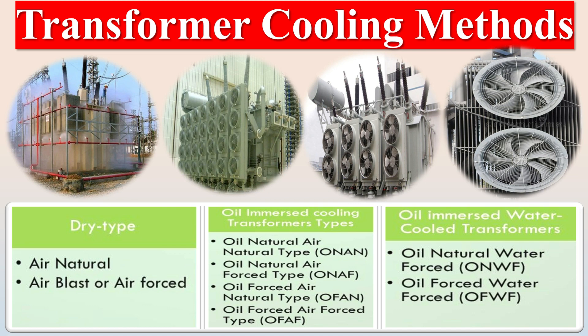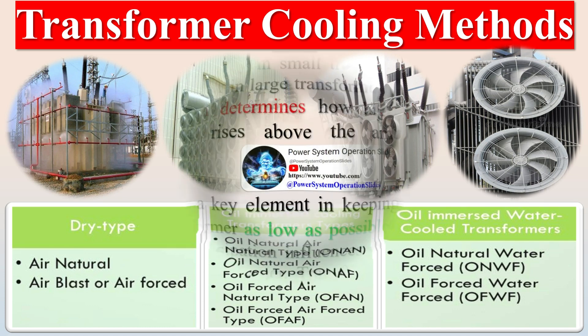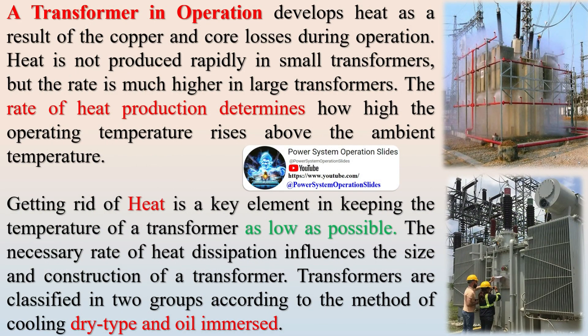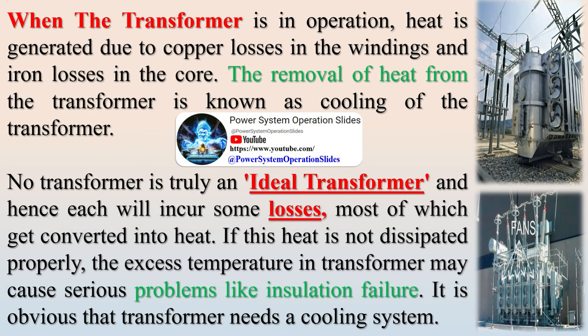A transformer in operation develops heat as a result of copper and core losses during operation. Heat is not produced rapidly in small transformers, but the rate is much higher in large transformers. The rate of heat production determines how high the operating temperature rises above the ambient temperature. Getting rid of heat is a key element in keeping the temperature of a transformer as low as possible, and the necessary rate of heat dissipation influences the size and construction of a transformer.